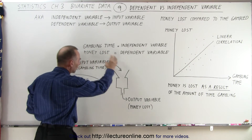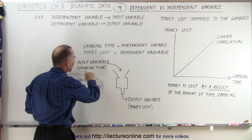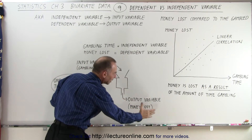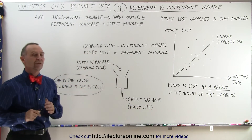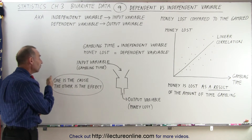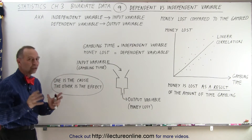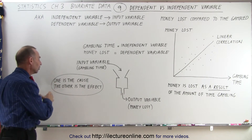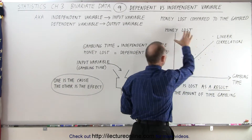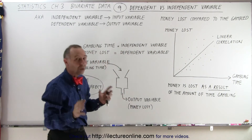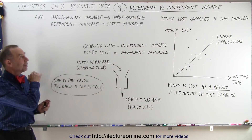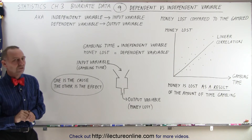You can think of the input variable as gambling time, and out of that comes the amount of money lost as the output variable. Another way of looking at it: one variable is the cause and the other is the effect. The amount of gambling is the cause; the effect is the amount of money lost. That's how we differentiate between dependent and independent variables.